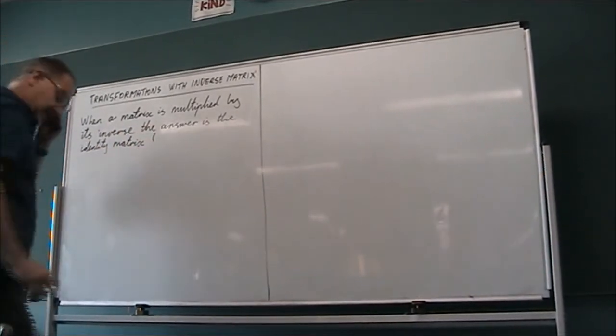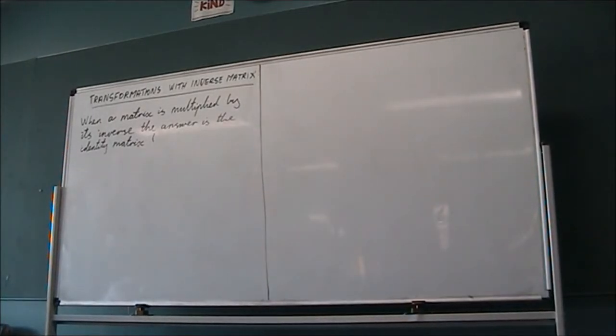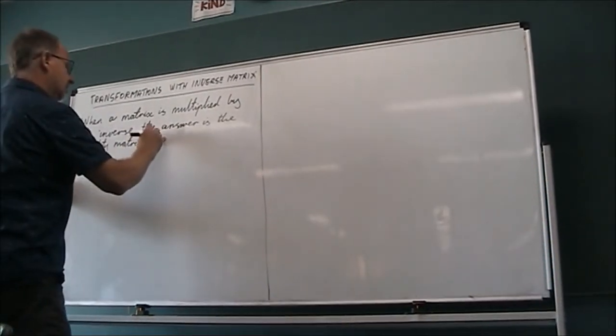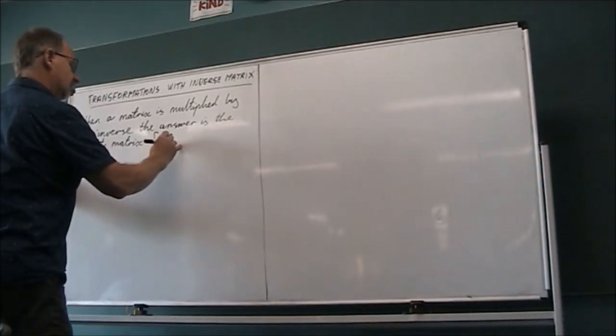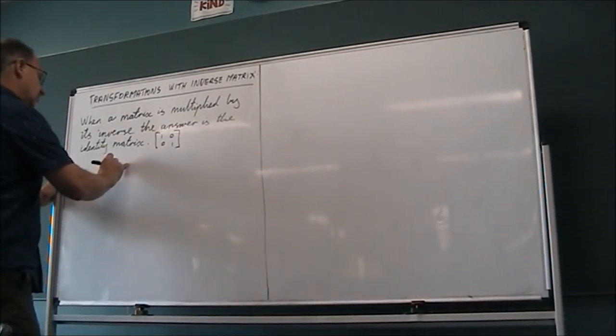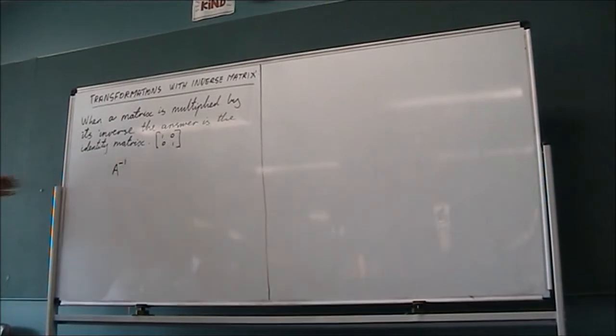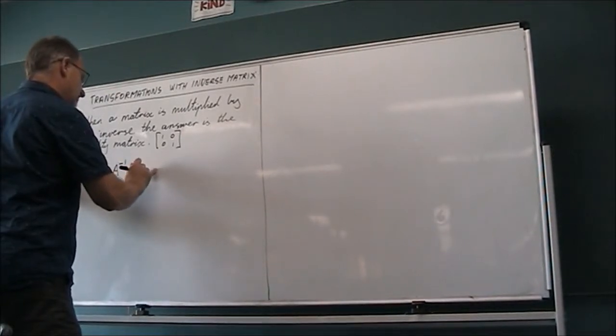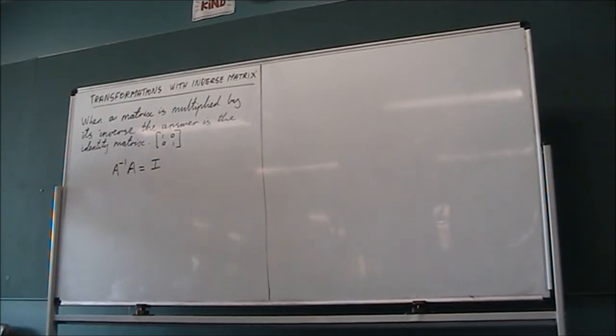So when you multiply a matrix by its inverse you get the matrix equivalent of the number 1. The matrix equivalent to the number 1 is the identity matrix.